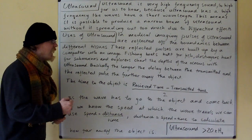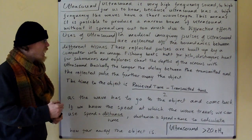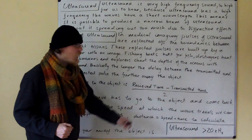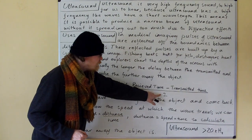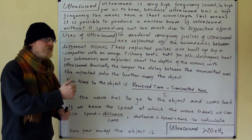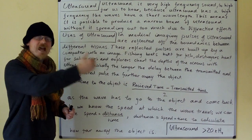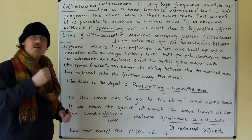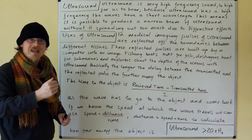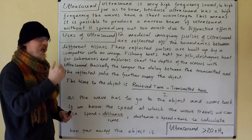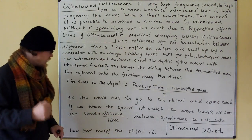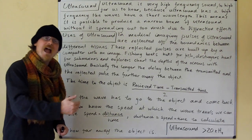The longer the delay between the transmitted and the reflected pulse, the further away the object. The time to the object is the received time minus the transmitted time, divided by two. So, suppose we sent out our pulse at four seconds and received it back at ten seconds. The difference is six, but it hasn't taken six seconds to reach the object — it took six seconds to get there and come back. So we divide by two, giving three seconds to the object, as the wave has to go to the object and come back.